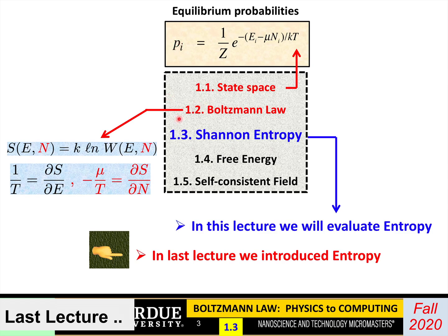In the second lecture, we went deeper into where this law comes from. And in the process, we introduced this concept of entropy, whose derivatives give you these two parameters, mu and T, that enter the equilibrium law. In this lecture and the next we'll be talking in more depth about this concept of entropy and these relations and where it all comes from.